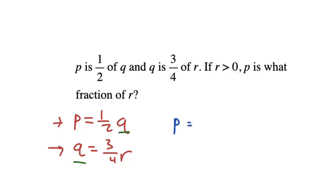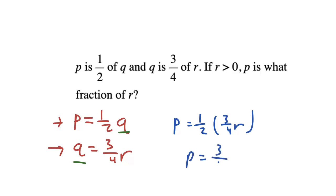So P equals one half of Q, and then for Q we substitute in three fourths of R, and we can just multiply out the fractions to get three eighths R. So P is what fraction of R? P is three eighths of R, and that does it.